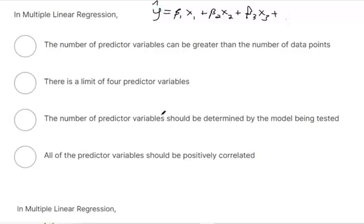So in multiple linear regression, the number of predictive variables can be greater than the number of data points. So actually, that's frowned upon. That's called overfitting. So you don't want to have more x values than you have data points.